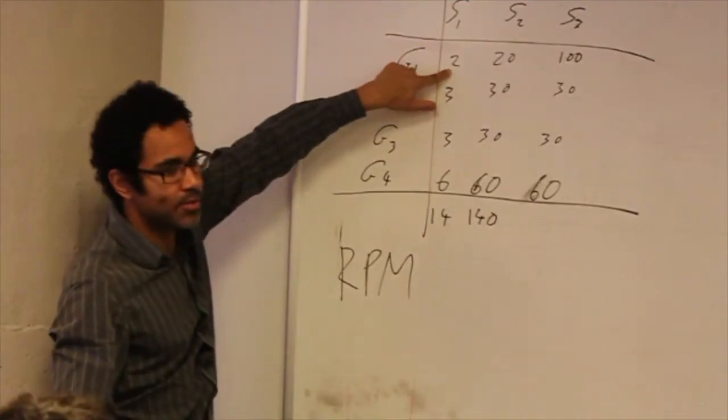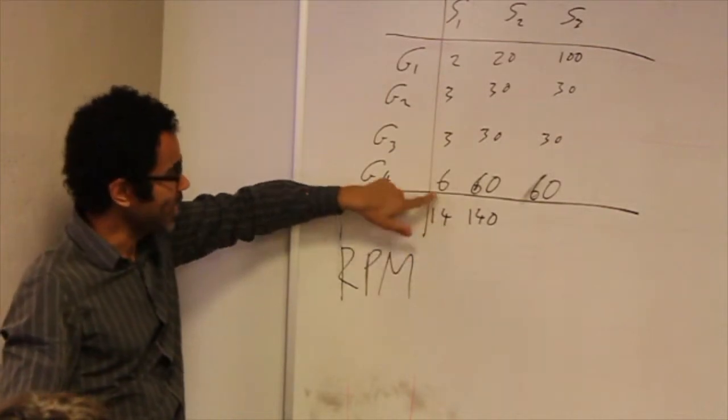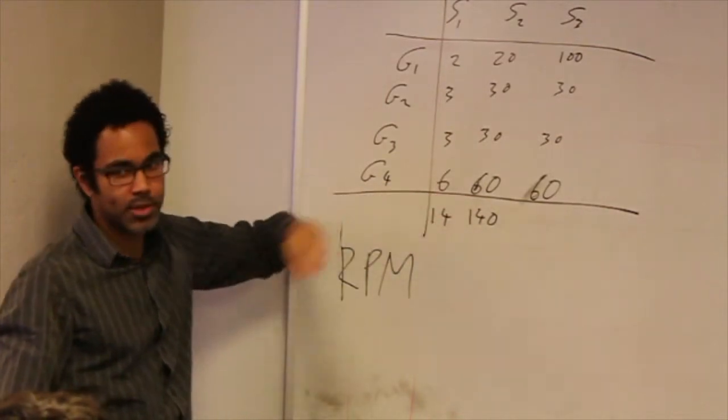How many reads do you have per million of the total? So essentially you're just scaling to make the totals the same across all samples.